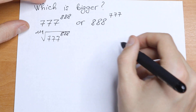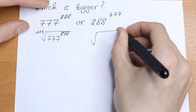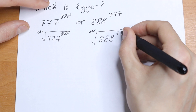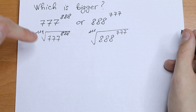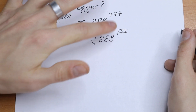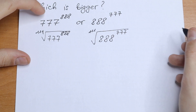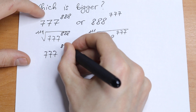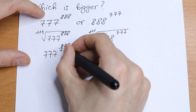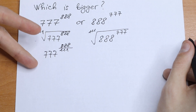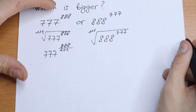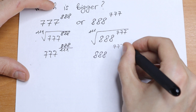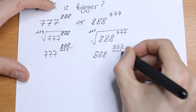And on the right, let's do the same — take the 111th root on the right of 888 to the power 777. We can write this expression another way: 777 to the power 888 divided by 111, and 888 to the power 777 divided by 111.